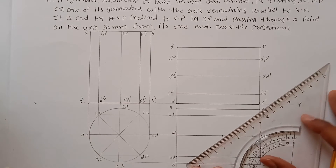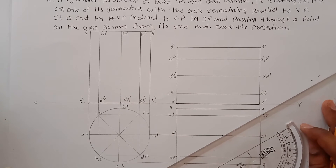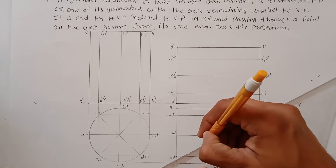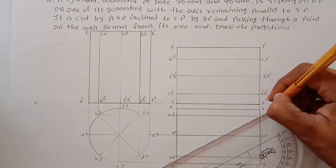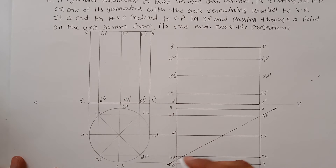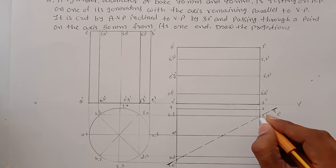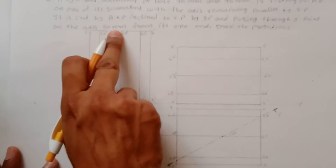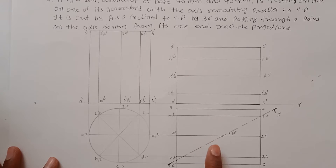Draw the sectional part at 30 degrees. Mark the thick ends. We are removing the upper portion, so mark the section as S-S-dash. The cutting points need to be identified — the angle is 30 degrees and the distance from the base is 50mm. You can measure 50mm from either end.